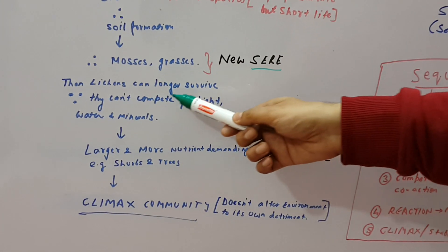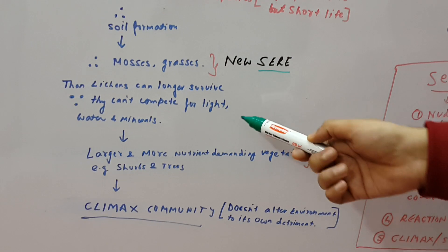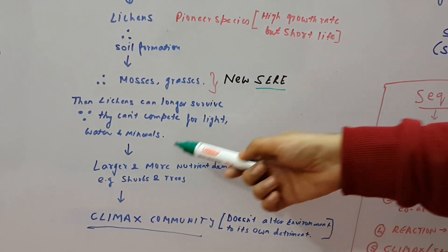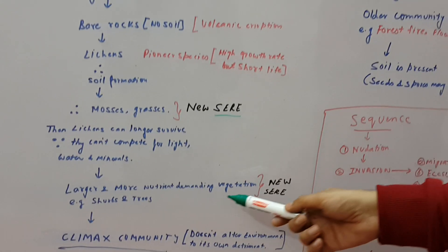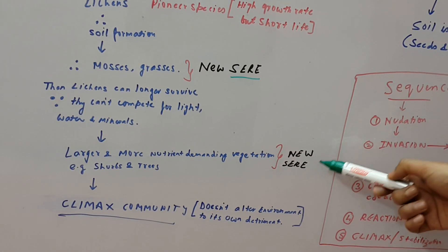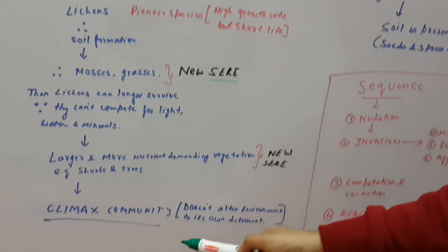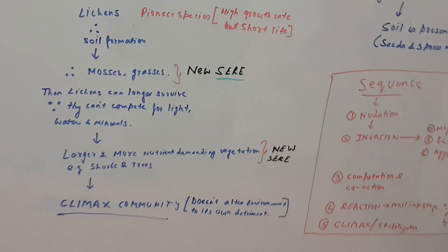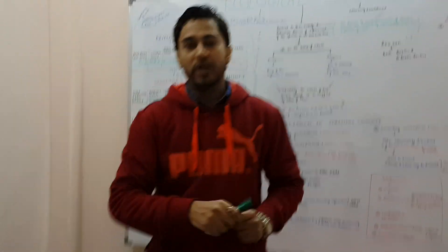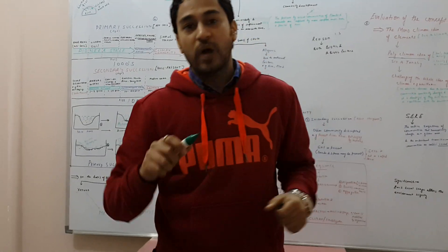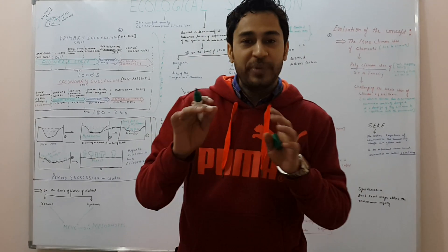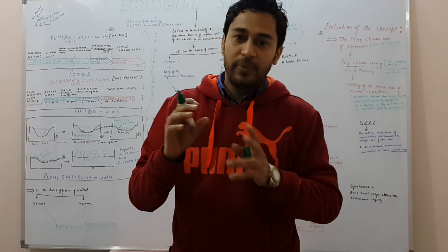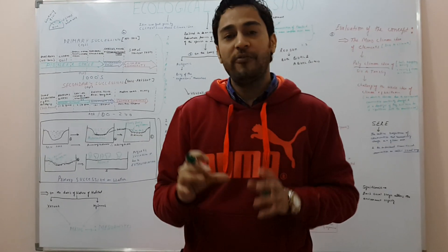Like I said earlier, lichens can no longer survive here because they cannot compete for light, water, and minerals. Then we have larger, more nutrient-demanding plants and vegetation. So we have a new sere here, and ultimately we will have a climax community. Climax community, like I said, does not alter the environment. One very important thing about climax community which I would like to add is that in the climax community you would most likely find mesophytes. Mesophytes are those plants which require moderate amount of moisture.